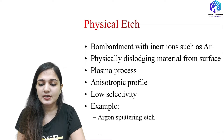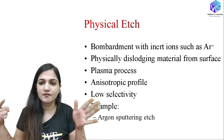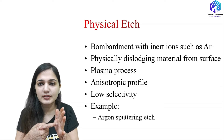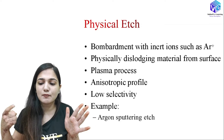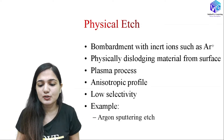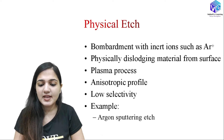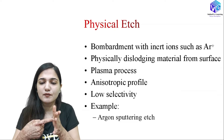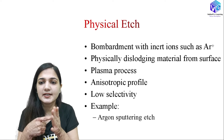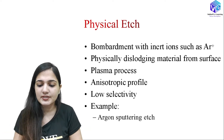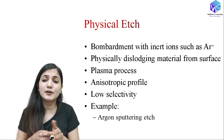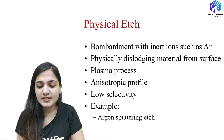Now coming to physical etching: here we have bombardment with inert ions such as argon ions. The bombardment damages the surface, removing surface atoms by breaking their bonds with the surrounding atoms. Surface atoms are removed when ions collide on the surface, physically dislodging material. It is a plasma process used for ion bombardment generation. It is an anisotropic process, giving removal only in the downward direction, but it has lower selectivity — it cannot distinguish between silicon and silicon dioxide and will remove all atoms in its path. The example is argon sputtering etch.